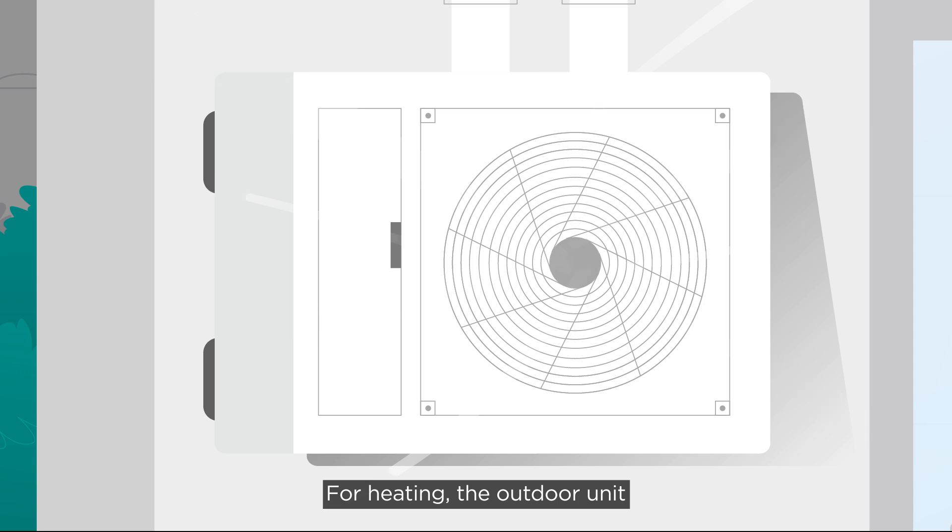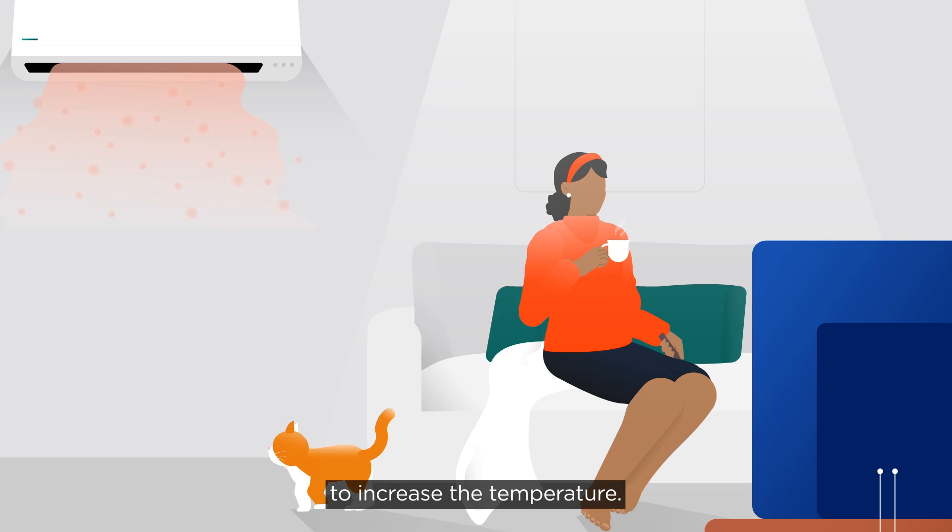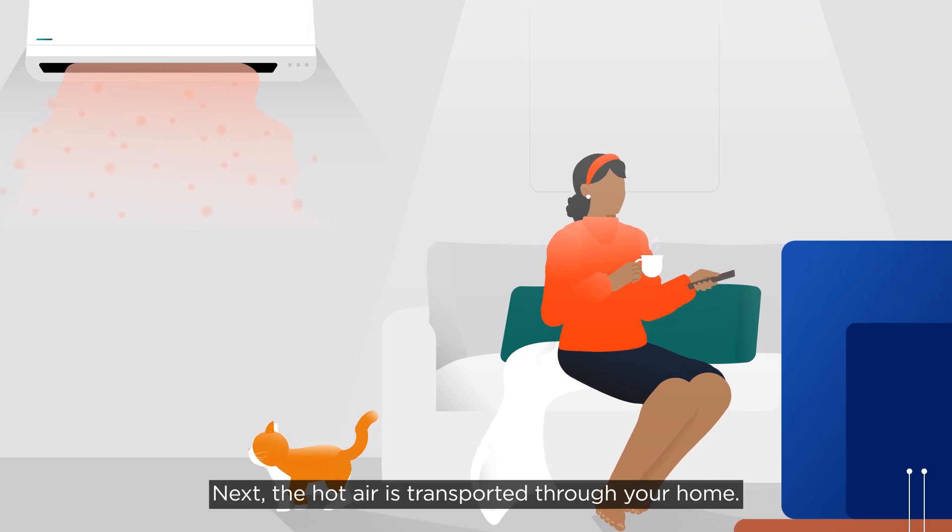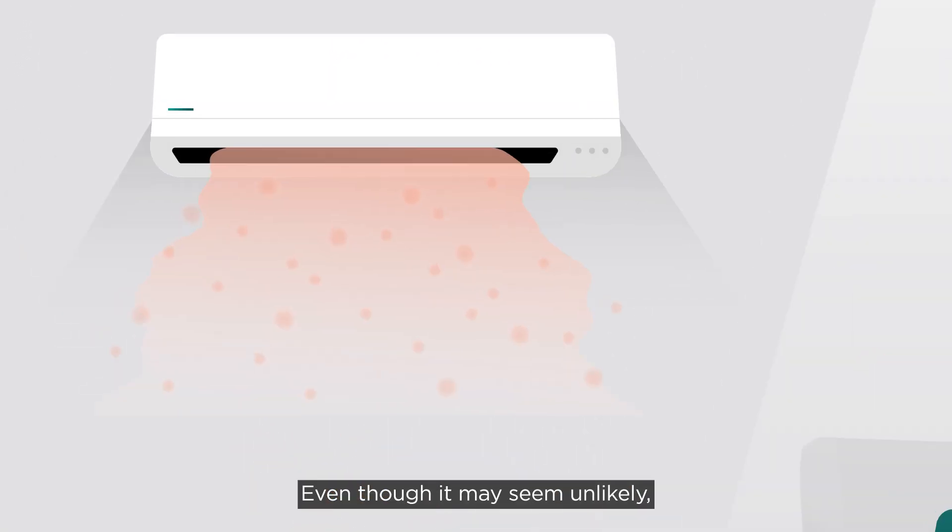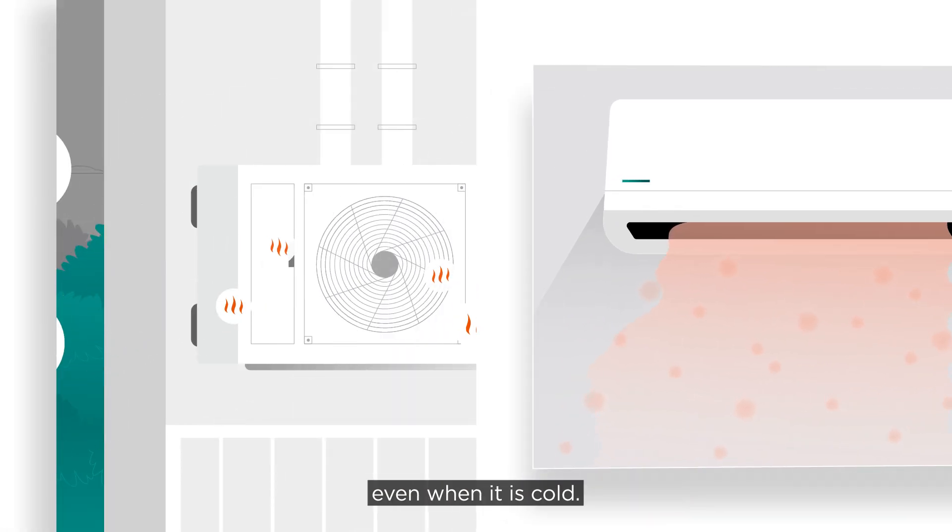For heating, the outdoor unit draws heat from the air outside and sends it through a refrigerant to increase the temperature. Next, the hot air is transported through your home. Even though it may seem unlikely, the air outside still contains some heat even when it is cold.